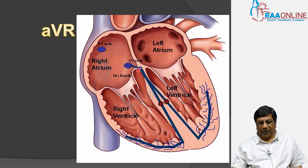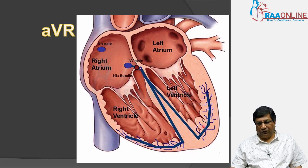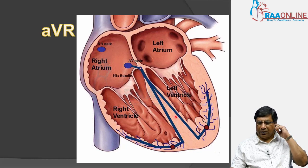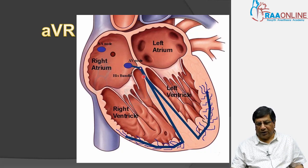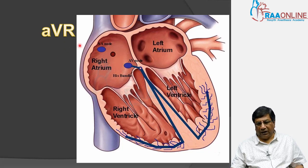Subsequently, ventricular depolarization through the AV node and the specialized conduction system travels from the right superior region to the left inferior region where the left ventricle is located. In a normal heart, because of the higher muscle mass of the left ventricle, the net cardiac depolarization travels left and inferior. So ventricular depolarization also moves away from lead AVR, which is why QRS is negative in AVR.